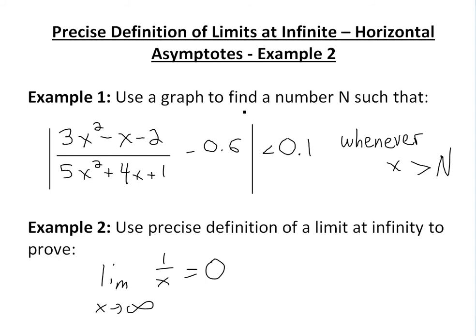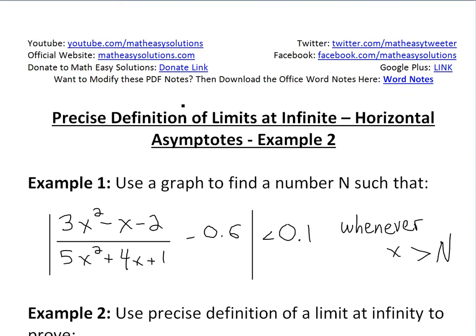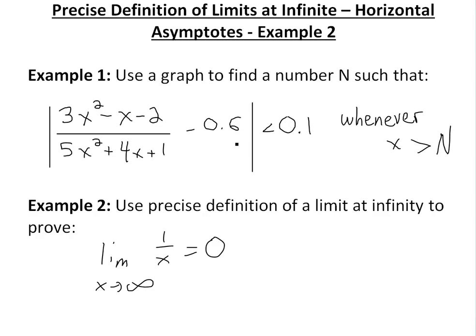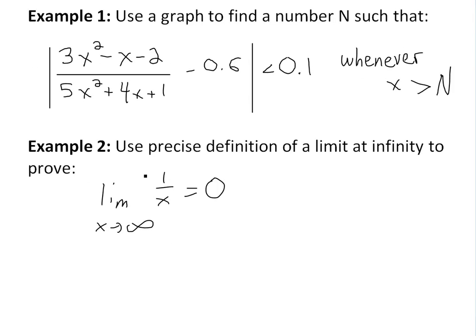Hi, it's everyone from The Math Easy Solution. Here we discuss further into the precise definition of limits at infinity, or horizontal asymptotes, and look at example two of this example series. Example two states: use the precise definition of a limit at infinity to prove the limit as x approaches infinity of one divided by x equals zero.